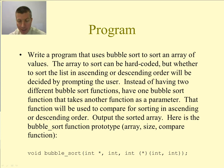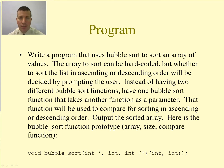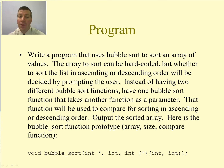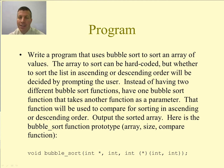Here is the prototype for the bubble sort function. It's going to take an int star — that's going to be a pointer to the array that we're going to sort. The second parameter, the int, is going to be the size of the array, and then the third parameter is a pointer to a function, which is going to be the function that determines whether we sort in ascending or descending order. We'll call it the compare function.